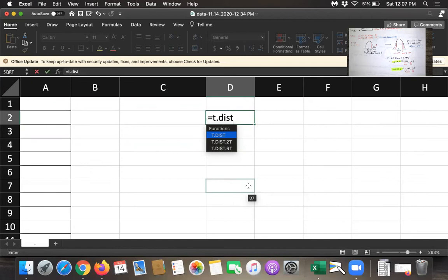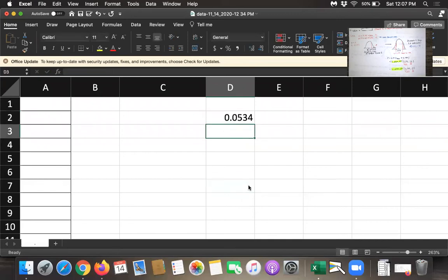So I think I will do the two-tailed test first and notice that when I enter the open parentheses it asks you for an x value and a degrees of freedom. We're thinking of this as a t value but it's the same thing 2.142 that was given to us and then the degrees of freedom was 12 so we get that value